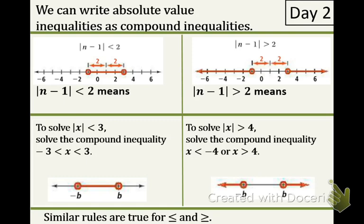We can write absolute value inequalities as compound inequalities. Let's take a look at the left side of your chart at the bottom half of your note sheet. Absolute value of n-1 is less than 2. This means that all numbers with a distance from 1 that is less than 2 units is included.